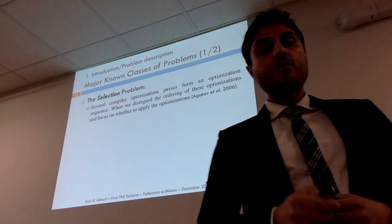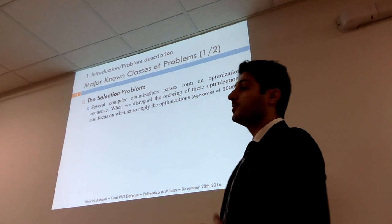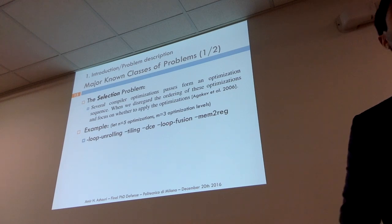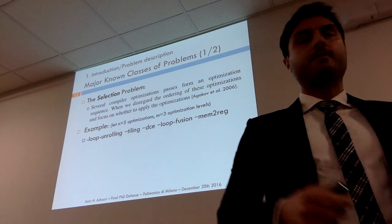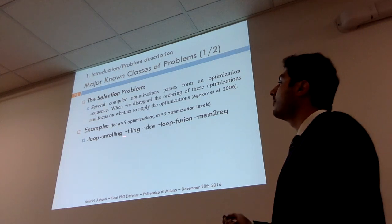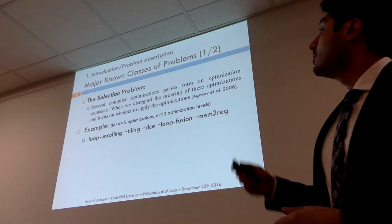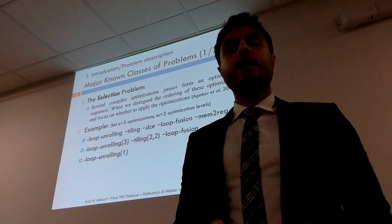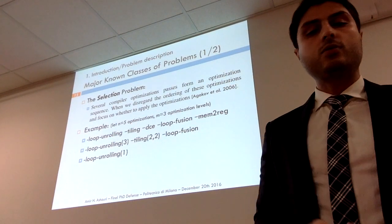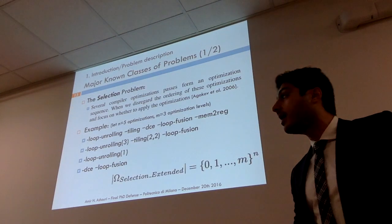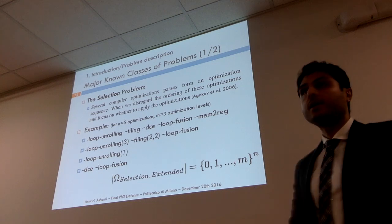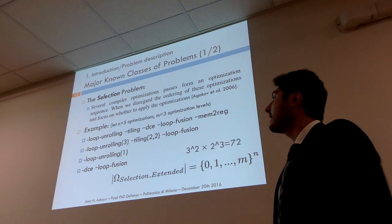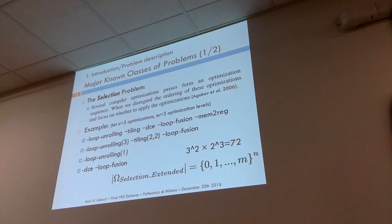In the extended version of the selection problem, we have both optimizations and certain optimization levels for some of them. For instance, loop unrolling might have a factor of three, or tiling two-by-two. This expands the space to n^m, where m is the number of optimization levels. Instead of 32, the space expands to 72 configurations.